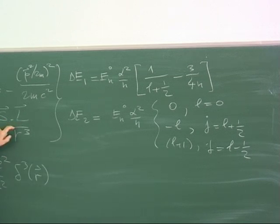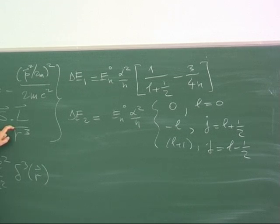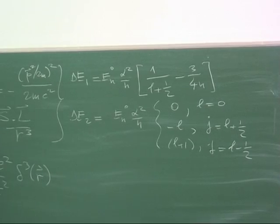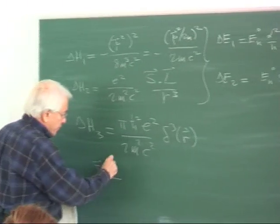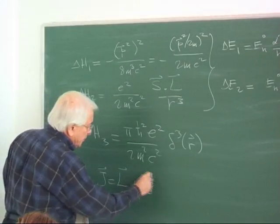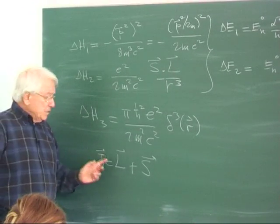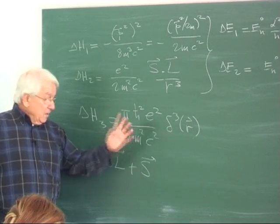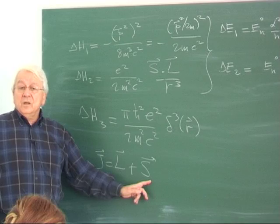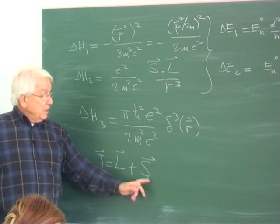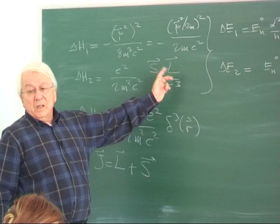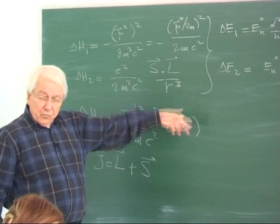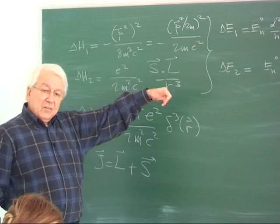Recall that the spin-orbit term involves S·L, which equals (J² − L² − S²)/2. If L equals 0, then J equals S directly. So J² − L² − S² becomes J² − S², which equals zero since J = S. Thus for L = 0, the spin-orbit contribution is automatically zero. For L different from zero, there are two possibilities: J equals L plus 1/2 or J equals L minus 1/2.